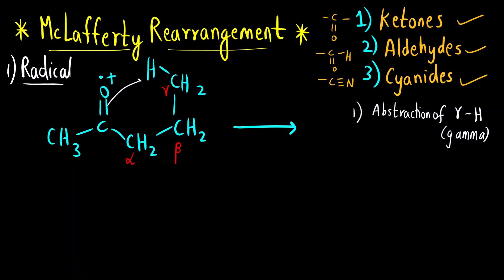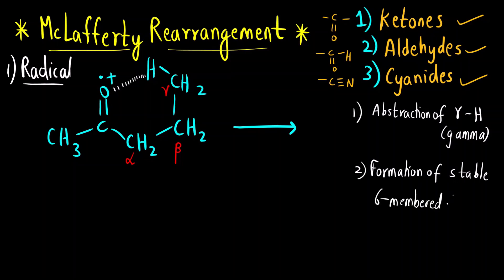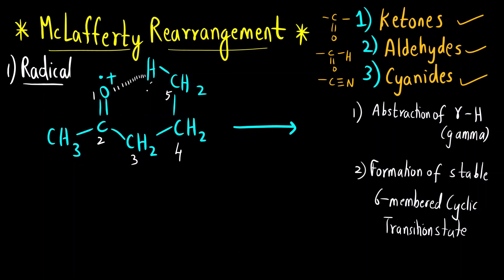Why is this gamma hydrogen abstracted? Because there is formation of a stable six-membered cyclic transition state. Why is it six-membered? Counting: one, two, three, four, five, and hydrogen makes six. So this is a six-membered cyclic transition state that is formed, and that is why the gamma hydrogen is abstracted. The hydrogens attached to gamma carbons are gamma hydrogens — here there are three hydrogens and any one of them can be removed.